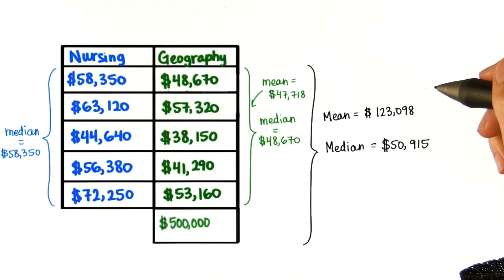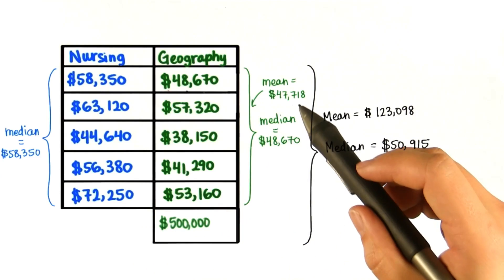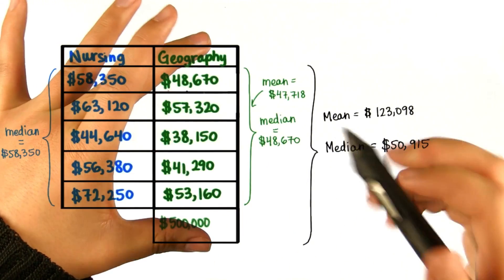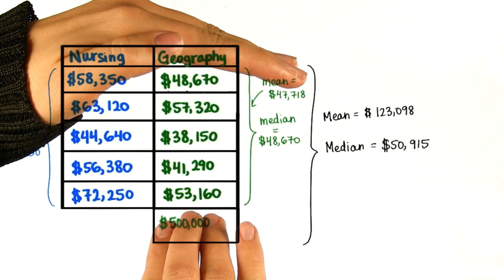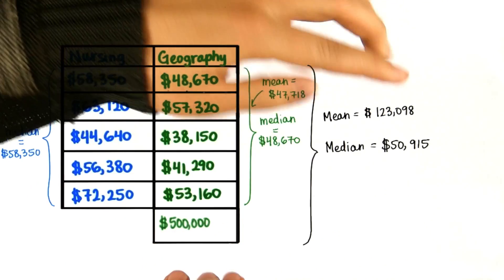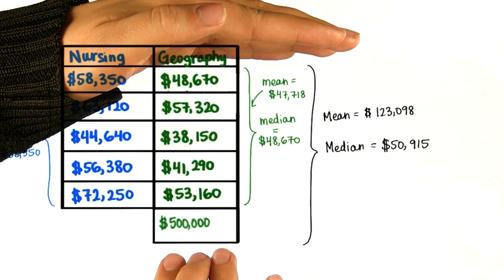You've done a lot so far, and let's just summarize what happened when we added this outlier to the data set. The mean changed from $47,718 when we just looked at these, to $123,098 when we looked at all of them.